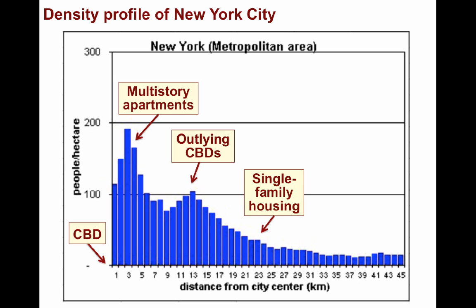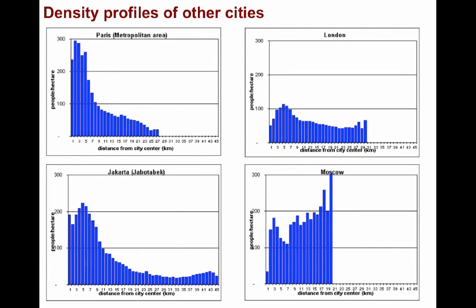Further out, as more space is available and the bid rent declines, more families can afford homes. And even further out, you typically find even nicer homes in the suburbs, which are separate residential communities within commuting distance of a city. You can see many other cities exhibit similar density profiles, especially those in the MDCs. These cities follow the basic human patterns predicted by bid-rent theory.